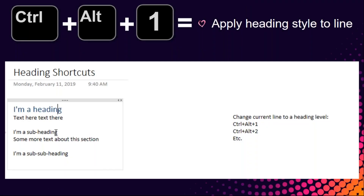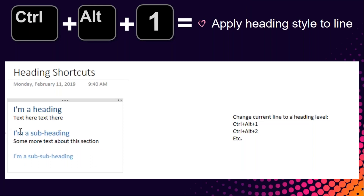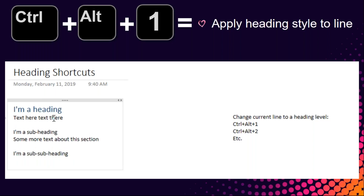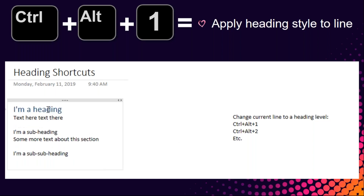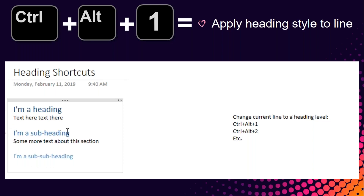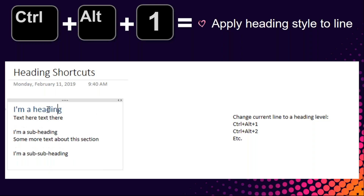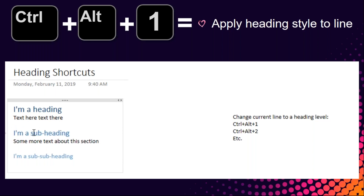Ctrl+Alt+1 through Ctrl+Alt+5 apply heading styles — the same heading styles available across Office apps like Word. These create a structure that translates easily into a table of contents or web page. You can use them while typing: Ctrl+Alt+1 for Heading 1, Ctrl+Alt+2 for Heading 2, and so on. By the time you're done you've created a nicely structured document with minimal effort. Note that heading styles in OneNote default to blue and you can't easily modify the style like you can in Word.